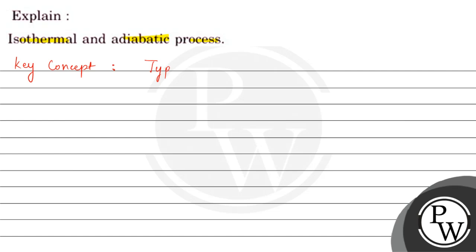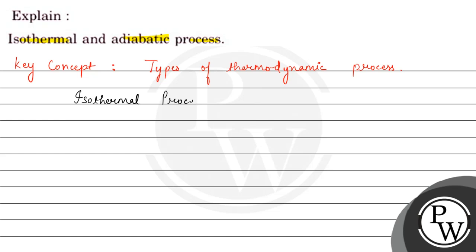Both of these are different types of thermodynamic processes. We will quickly divide into two parts — one side for isothermal process and on the other side we will see adiabatic process.